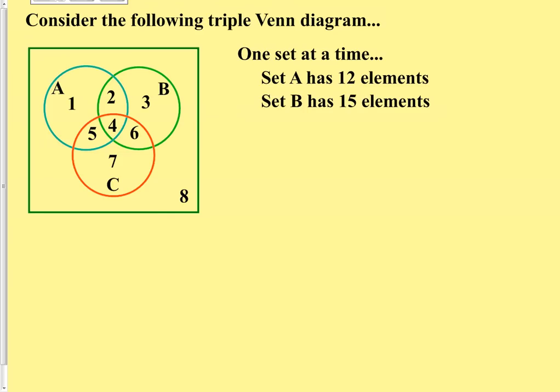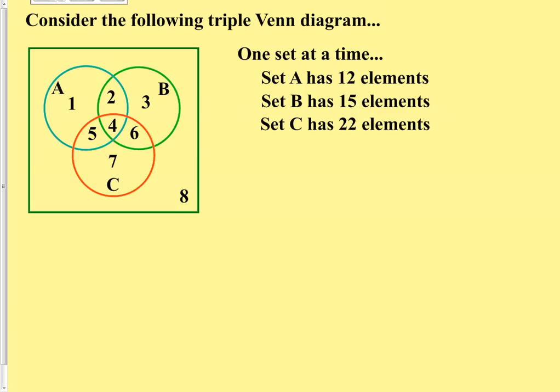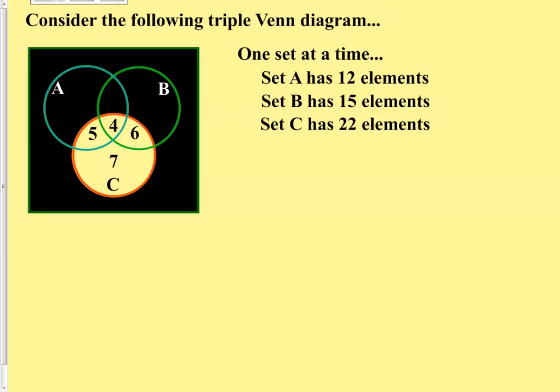Set B, on the other hand, has 15 elements. And again, if you black out everything else except for set B, we have two elements, three elements, four elements, and six elements. Set C will have 22 elements. Blacking out everything except for set C, we have a five, a four, a six, and a seven. That is 22 total elements.